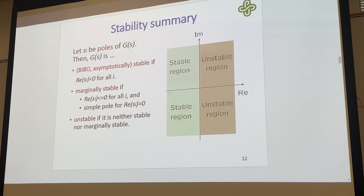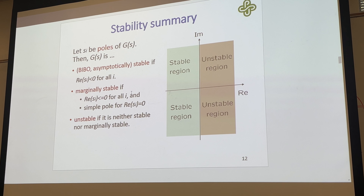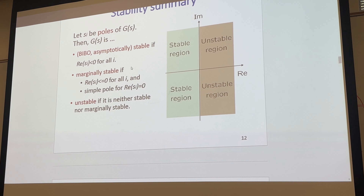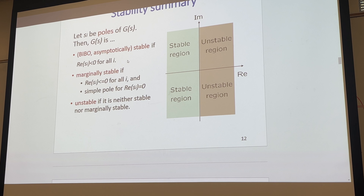The transfer function is BIBO and asymptotically stable if all the real parts are less than zero for all poles. Marginally stable if the real part is less than or equal to zero for all i, and there can only be a simple pole where the real part of S sub i equals zero — no repeated roots. The unstable condition applies if neither stable nor marginally stable conditions hold — meaning something in the open right half plane or multiple roots on the jω axis.